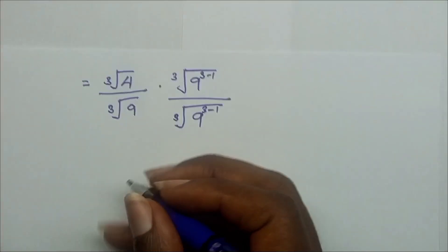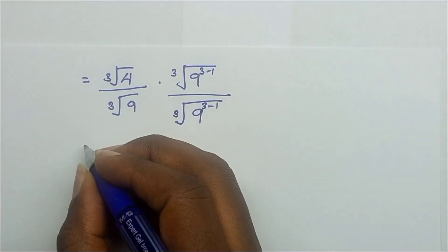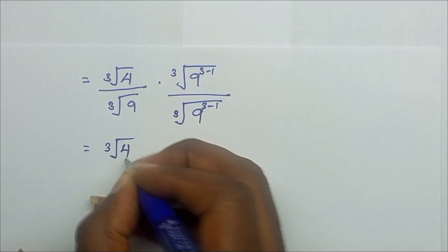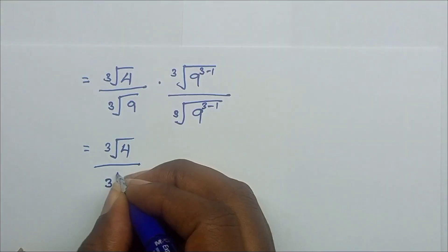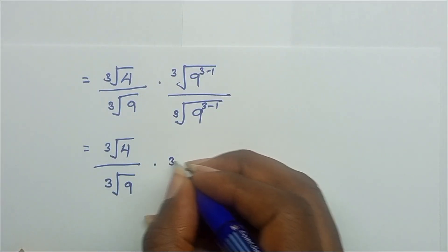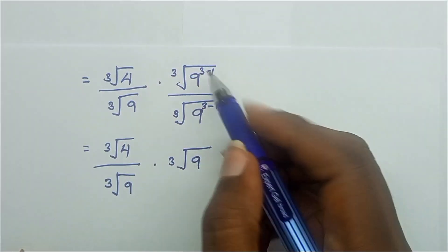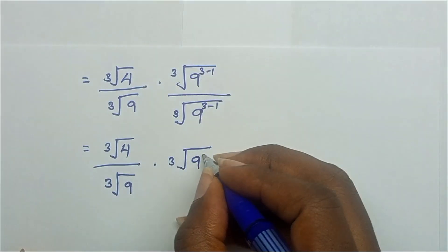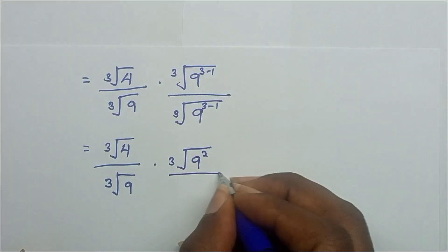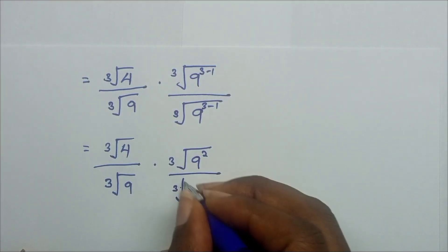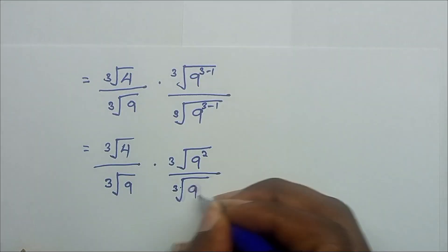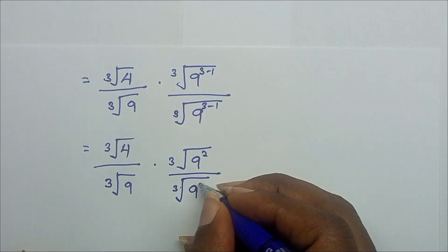Applying this, we multiply: cube root of 4 over cube root of 9, times cube root of 9 to the power (3 minus 1), which is 9 to the power 2, over cube root of 9 to the power 2.